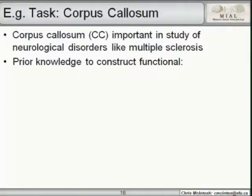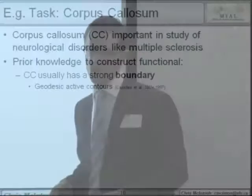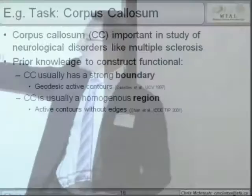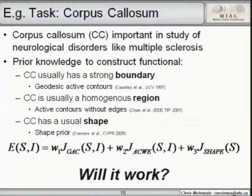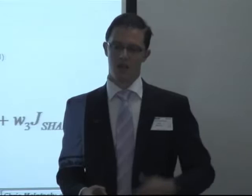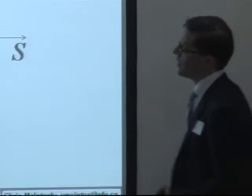For corpus callosum segmentation, we can use prior knowledge to construct an energy functional. The CC usually has a strong boundary, so we build in an edge term; it's homogeneous, so we add a region term; and it has a particular shape, so we add a shape term. The result is a weighted combination, and the question is whether this can be reliably deployed to a radiologist for large-scale disease studies.